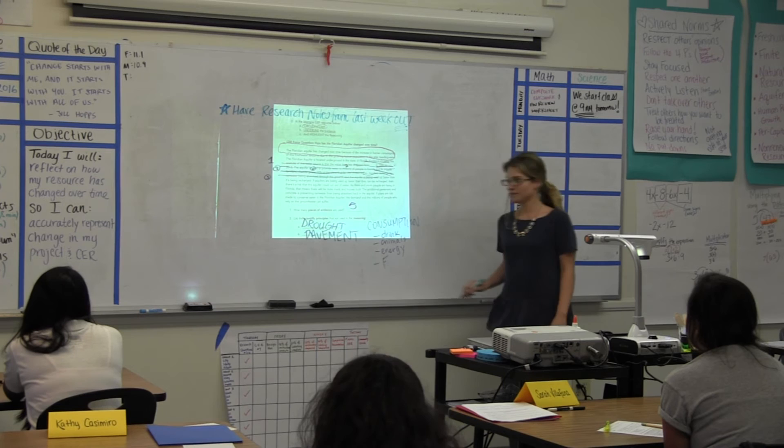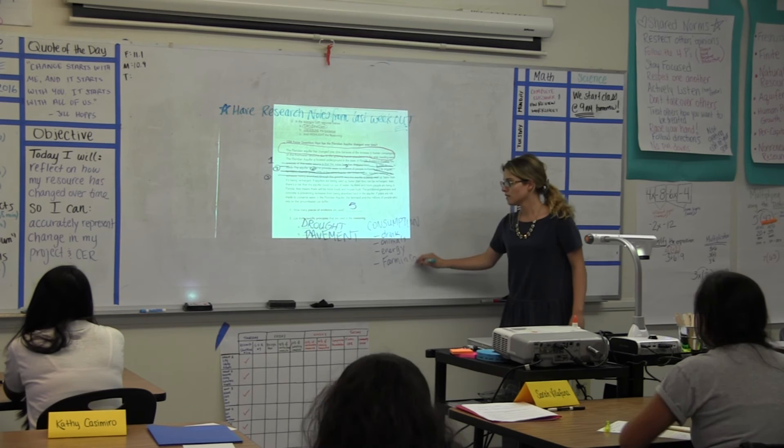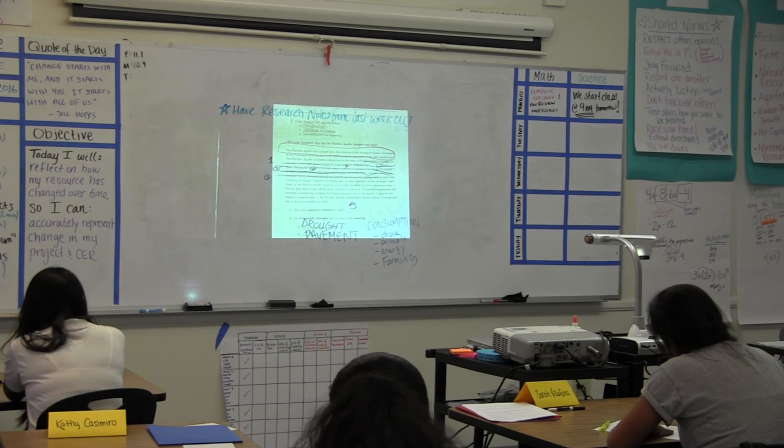And last one that starts with N. Farming. Farming, yeah. So because of drought, pavement preventing water from being absorbed, and overall consumption, because they're just using water way too much, that's when we were able to reason through our argument, connecting our claim with our evidence.